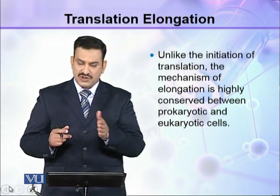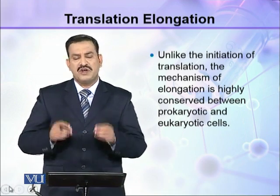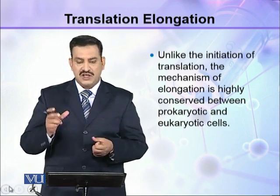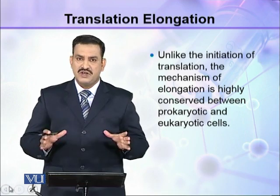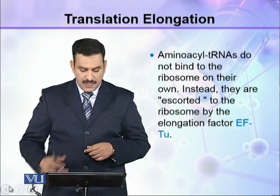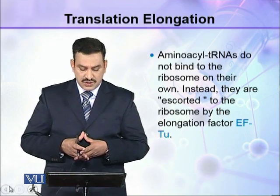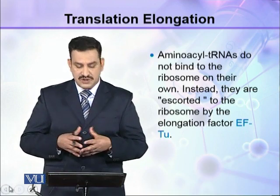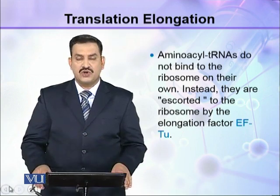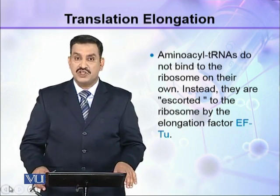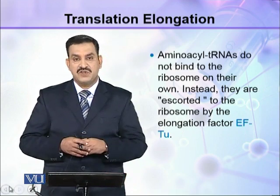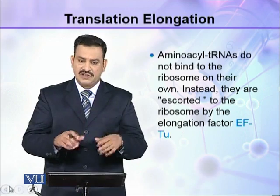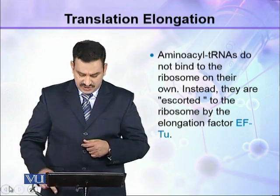Unlike the initiation of translation, the mechanism of elongation is highly conserved between prokaryotic and eukaryotic cells. This elongation process is the same in eukaryotes and prokaryotes, whereas translation initiation differs between them. Aminoacyl tRNAs do not bind to the ribosome on their own; instead they are escorted to the ribosome by the elongation factor EF-TU.